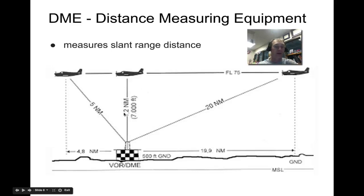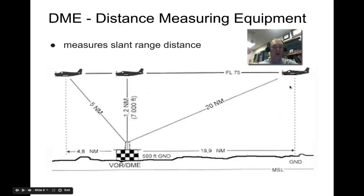When you're right over the top of the station, it will still read 1.2 nautical miles because that's your actual altitude. At 4.8 nautical miles away, the diagonal reading gets closer to your actual ground distance. A pilot needs to know that DME gives the slant height — the hypotenuse — of the distance from the VOR station.